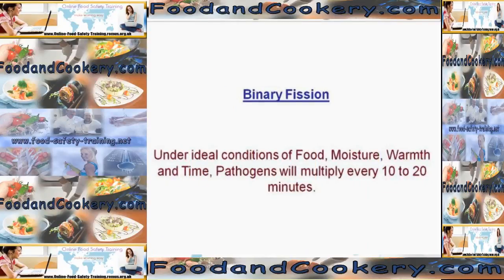Binary fission is a word you might come across in food safety. What this means is this is how bacteria multiply — they double. With human beings, when we reach maturity, we give birth to children; they reach maturity, they give birth to children. When bacteria reach maturity, they split in half, or they double in number. So, under ideal conditions of food, moisture, warmth and time, pathogens will multiply every 10 to 20 minutes — in other words, they'll double every 10 to 20 minutes.